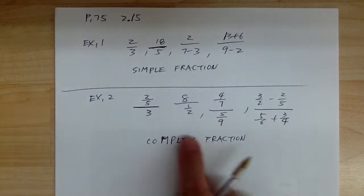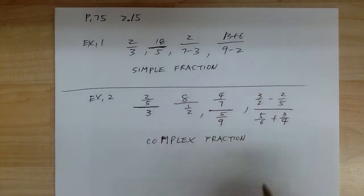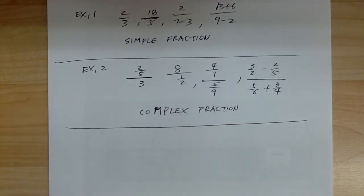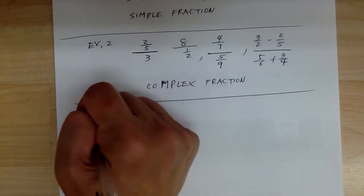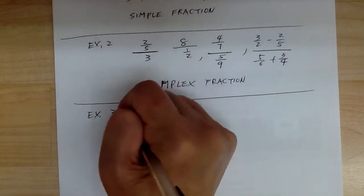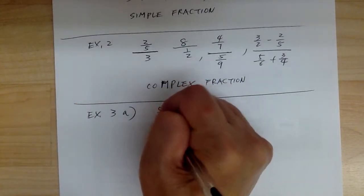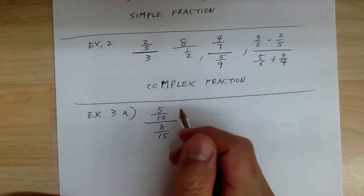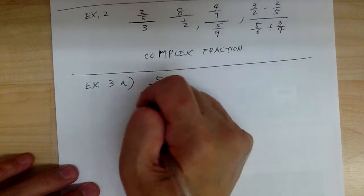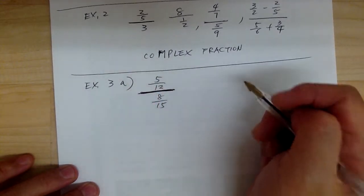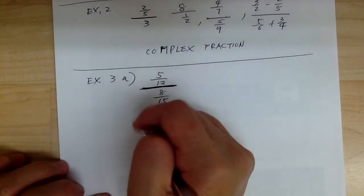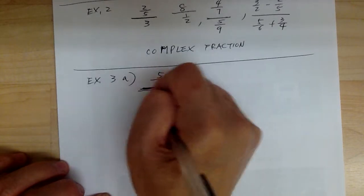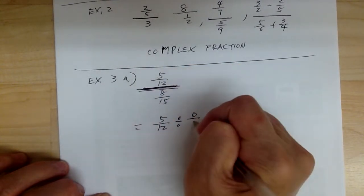A complex fraction is when you have more than one fraction line. Let's go over how to do this. In example 3, you have 5 over 12 over 8 over 15. You have to pay attention to see which one is your main line — this is the main line over here. So this means division: 5 over 12 divided by 8 over 15.